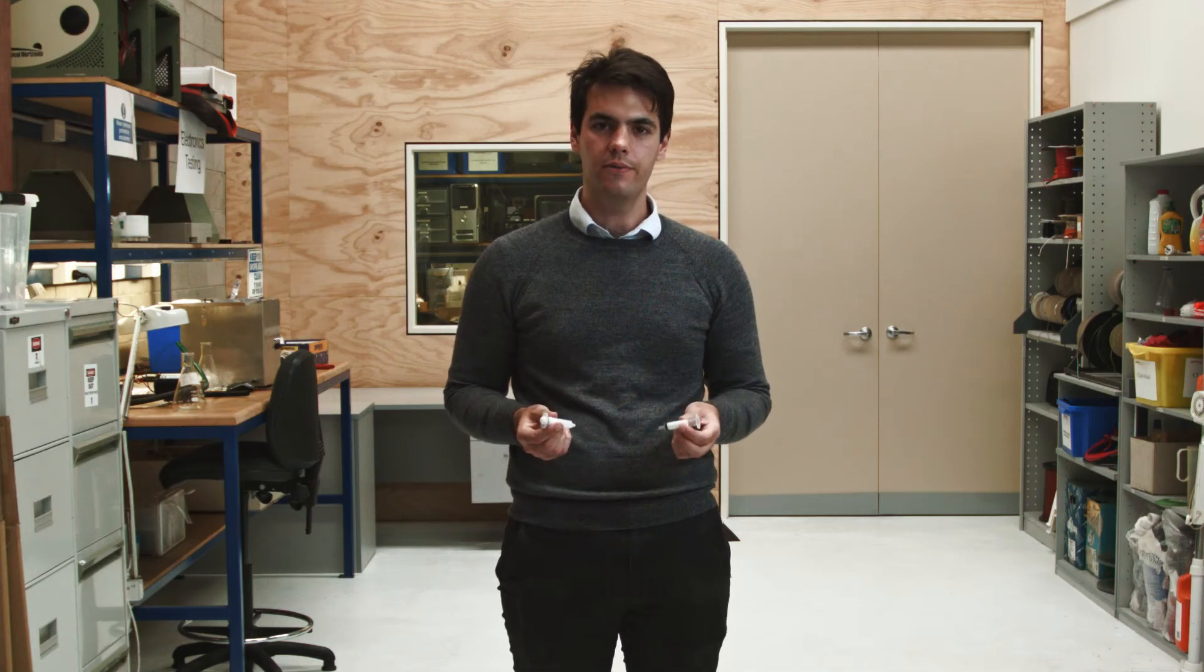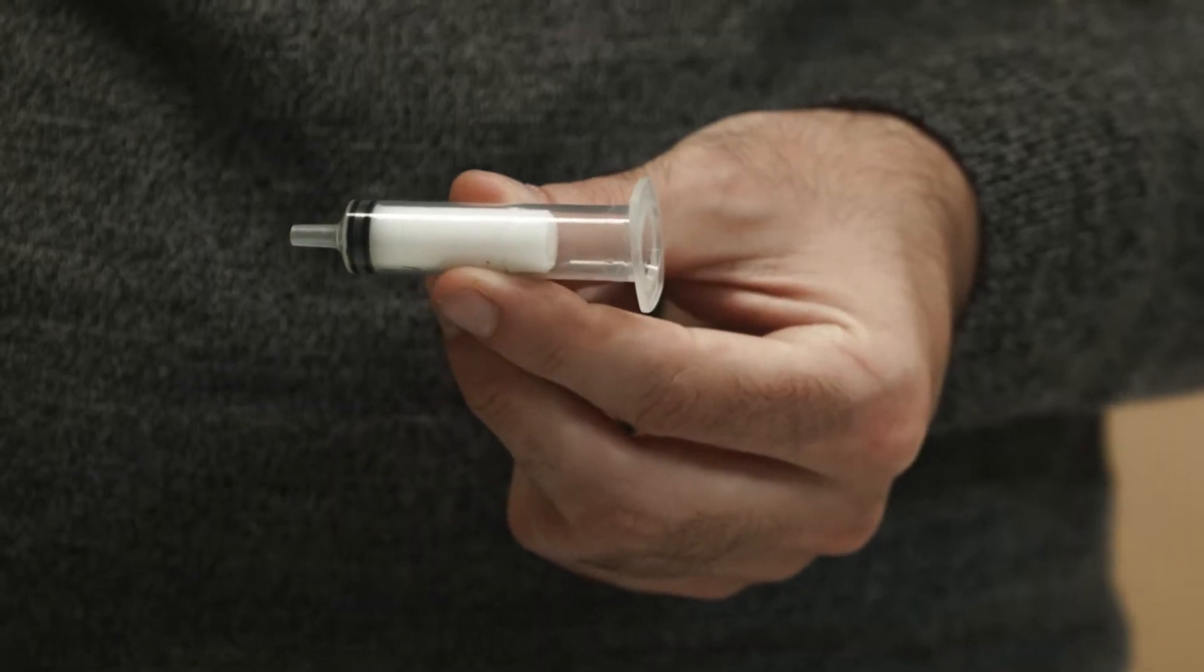For the initial few prototypes of the Felixer, we used a machined cartridge that was based off a syringe that we found off the shelf. This proved adequate for concept validation, but largely inadequate for mass production.